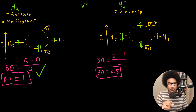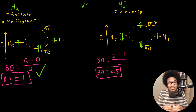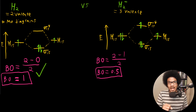Physically, the extra electron added in H2 minus goes into an antibonding orbital. Whereas H2 had no electrons disfavoring bonding, H2 minus has one electron that disfavors it — so even though it's an extra electron, it weakens the bond rather than strengthening it. In the next video, we'll go through more examples of calculating bond order, drawing these diagrams, and making sense of molecular orbitals.